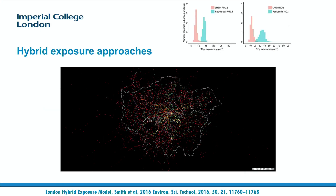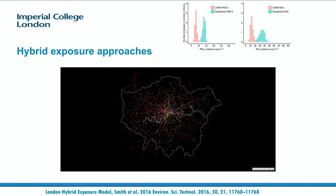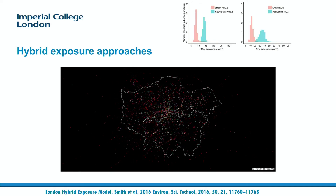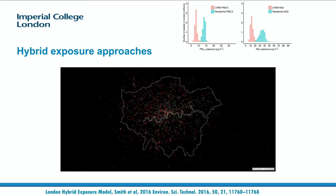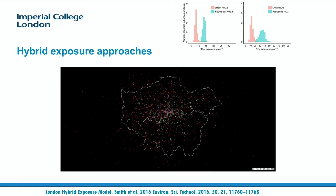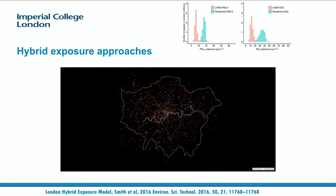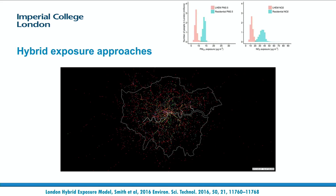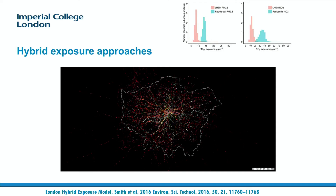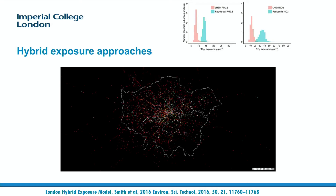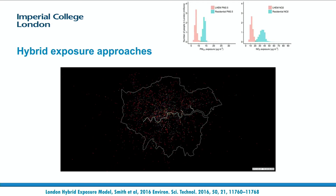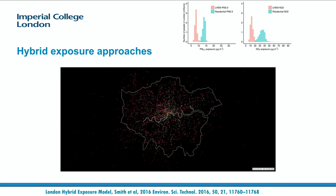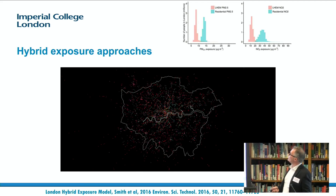We've got measurements from lots of different locations, and how do we integrate these into a single exposure? This is work from the modelling team, and it takes the London Travel Demand Survey — interviews from thousands of people in London about how they move through the London environment. By taking where they are outdoors, whether they're driving, whether they're on the London Underground, you can integrate that exposure to give a better exposure assessment than just looking at one outdoor air pollution monitor. What you get is a very different exposure from the LHEM — the London Hybrid Exposure Model — than you would normally.